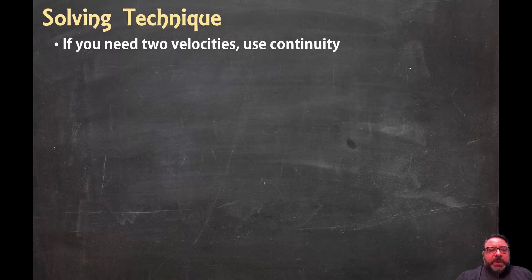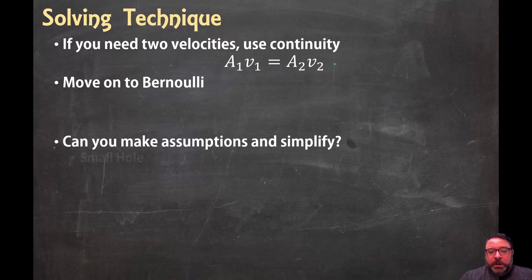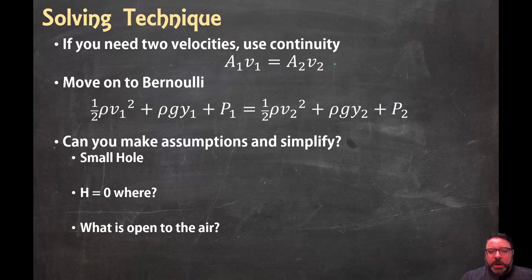So the first thing I'm going to do, I know I need two velocities. So I'm going to use the continuity equation. So I'm going to throw that in there. The area at the top or point 1 times the velocity at the top of the tank, that's the kind of big area of the tank, is equal to the area of the hole times the velocity of the liquid coming out of the hole. So I know I can apply that. I'm also then going to apply Bernoulli's equation. Just taking Bernoulli's equation and setting it for point 1 and for point 2. And then I'm going to look and see if I can make any assumptions.